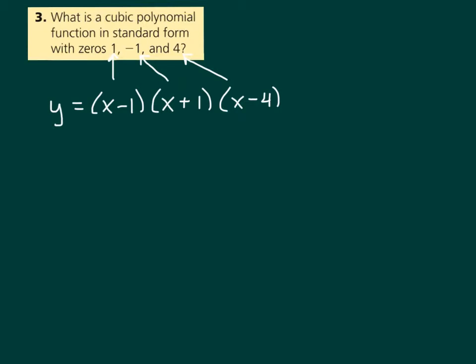Now they ask for this in standard form. If the question was, what is a cubic polynomial with zeros 1, negative 1, and 4, you could stop here. That is a cubic polynomial function with zeros 1, negative 1, and 4. But they have this piece in there in standard form, which means we have to multiply all of this out.